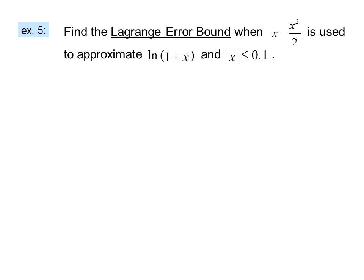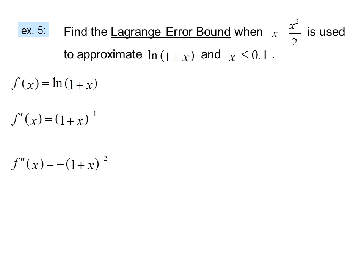Example 5: Find the Lagrange error bound when x - x²/2 is used to approximate ln(1 + x) and |x| ≤ 0.1. We have f(x) = ln(1 + x), f'(x) = (1 + x)⁻¹, f''(x) = -(1 + x)⁻², f'''(x) = 2(1 + x)⁻³. This looks just like we are constructing the series.